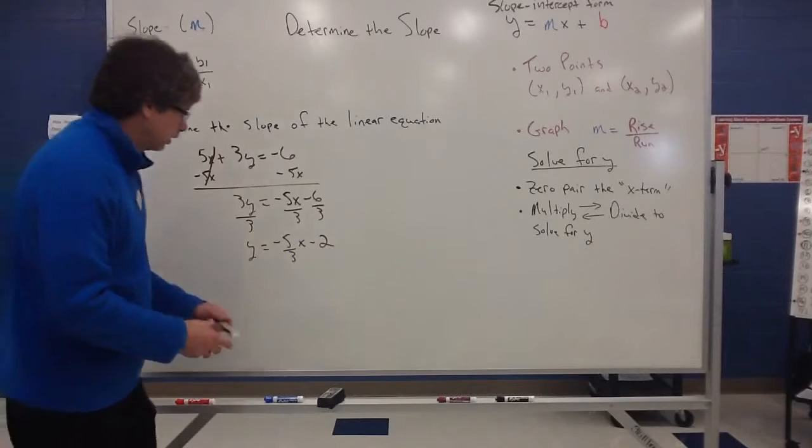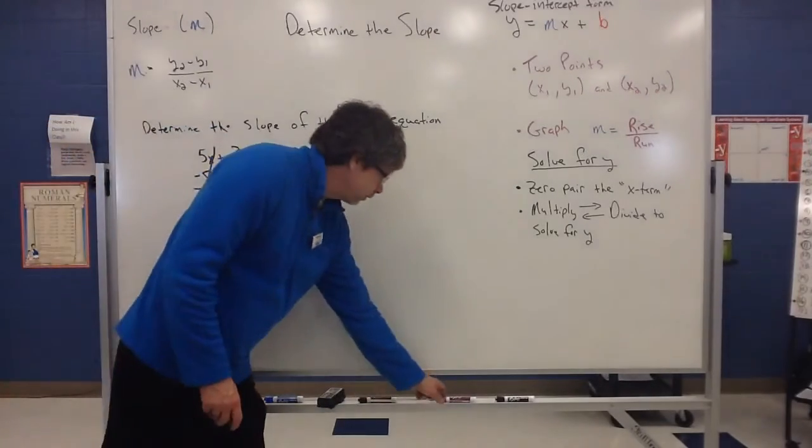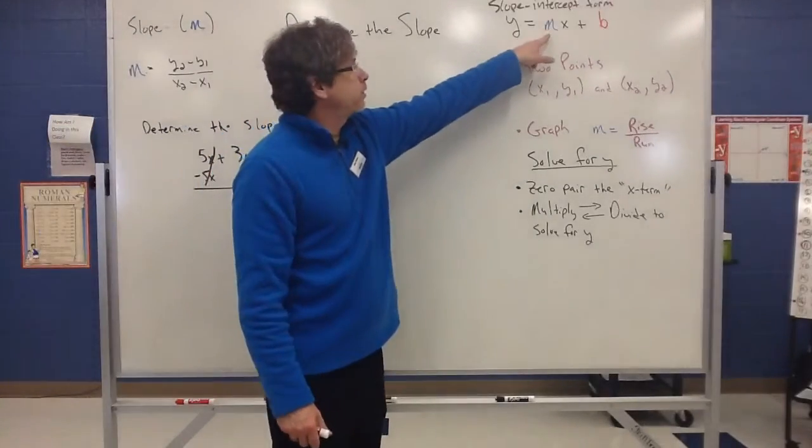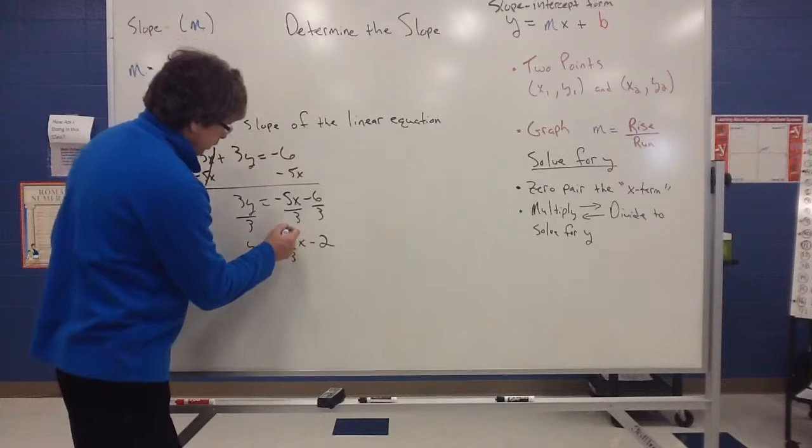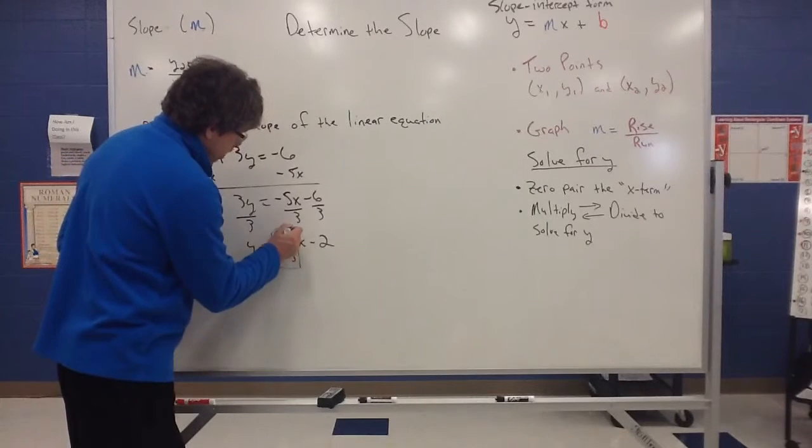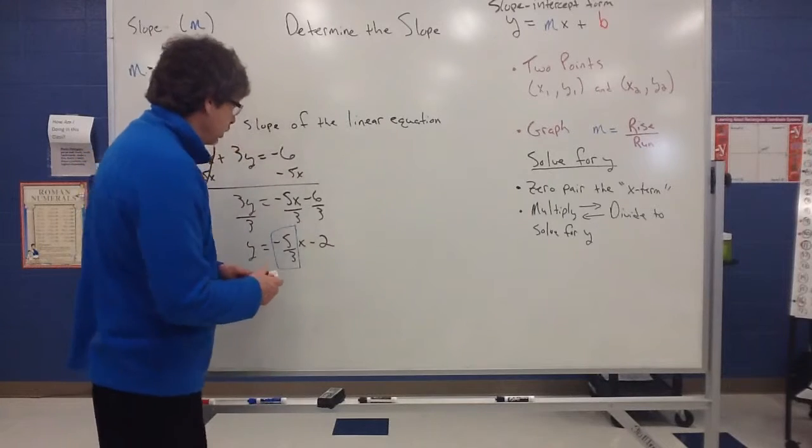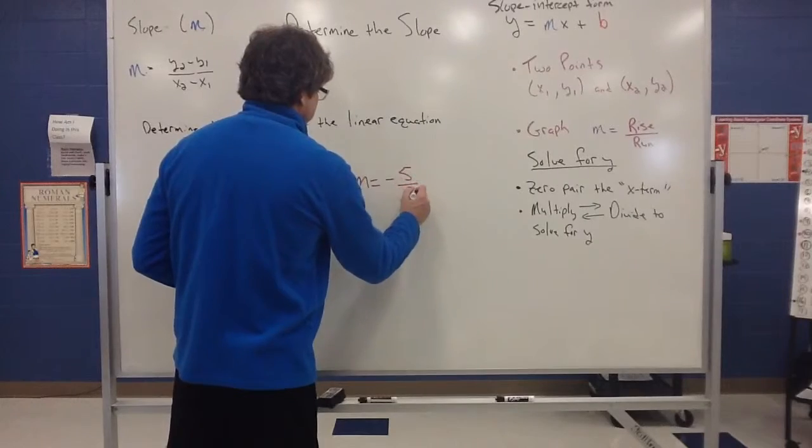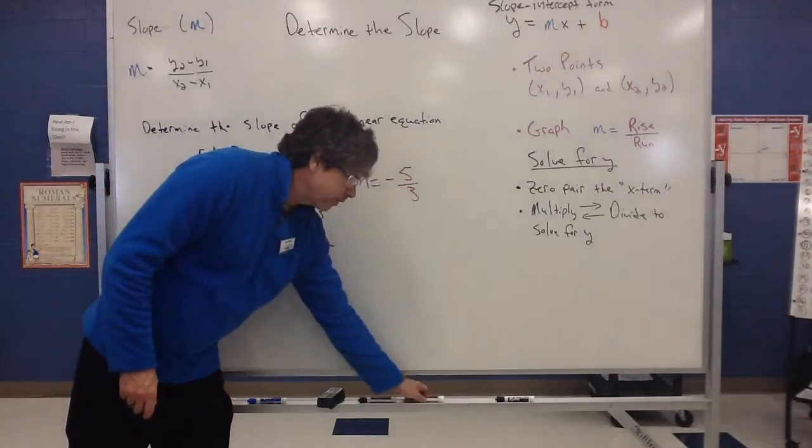So I have solved for y. Therefore, I know that the coefficient in front of x, that negative 5 thirds, is indeed my slope. So m is going to equal a negative 5 thirds. So your slope is going to equal negative 5 thirds.